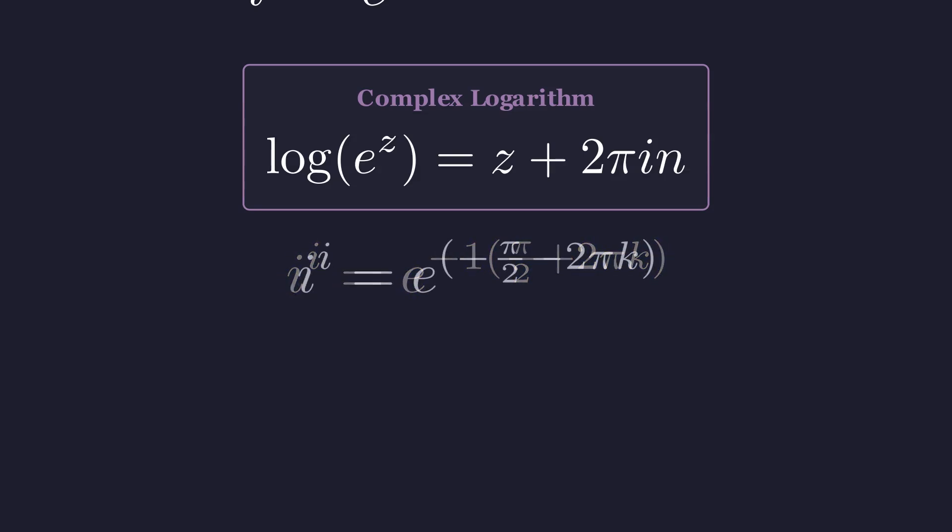Let's distribute that negative 1 across the terms inside the parenthesis. And cleaning it up, we get our final general form.